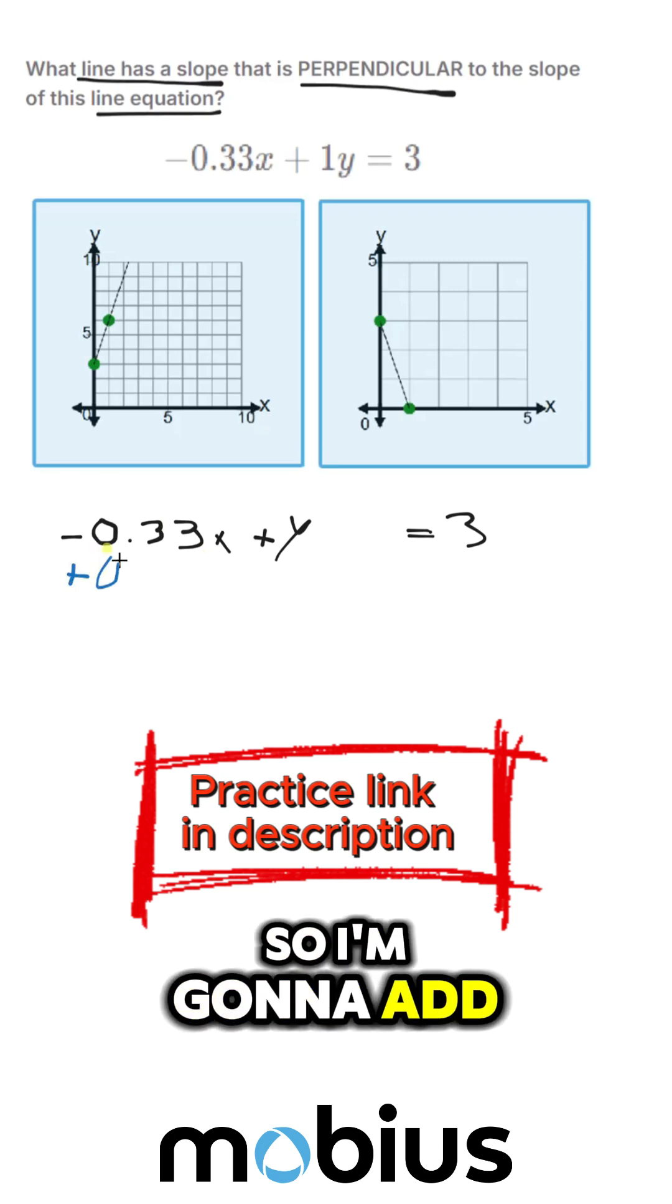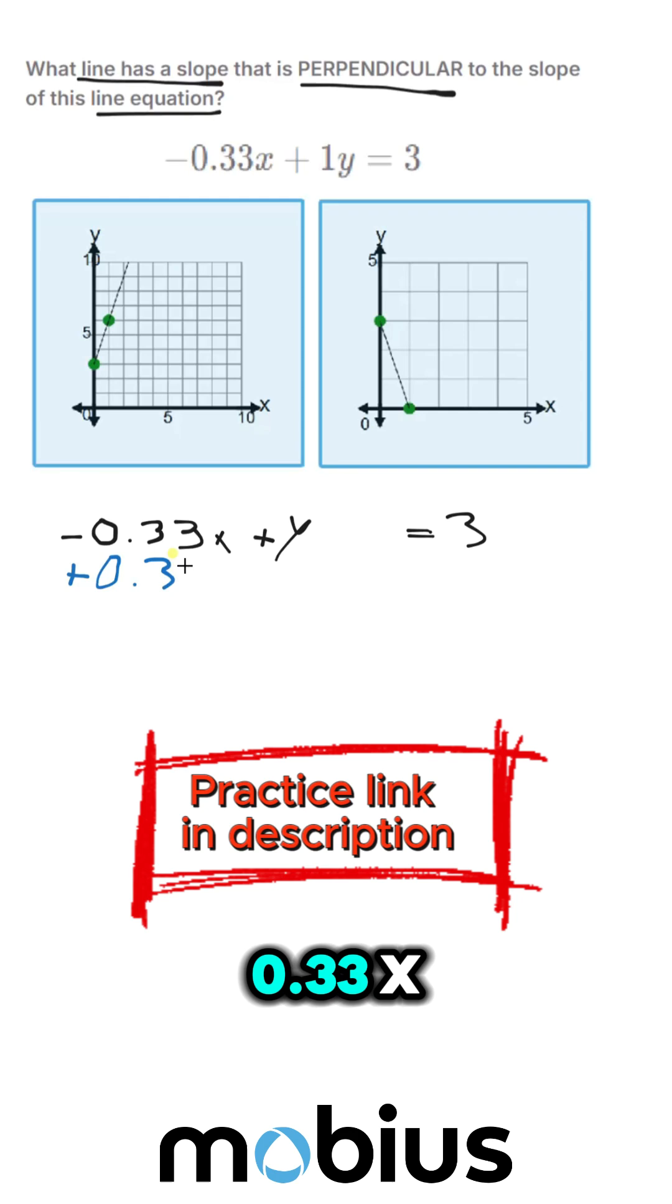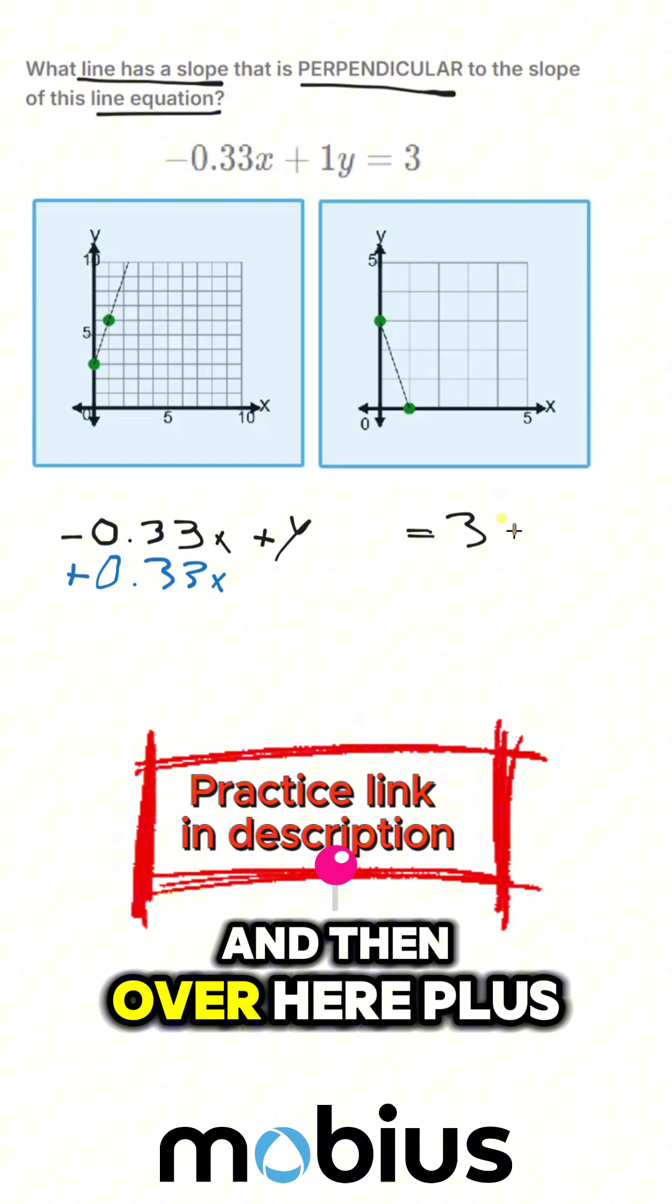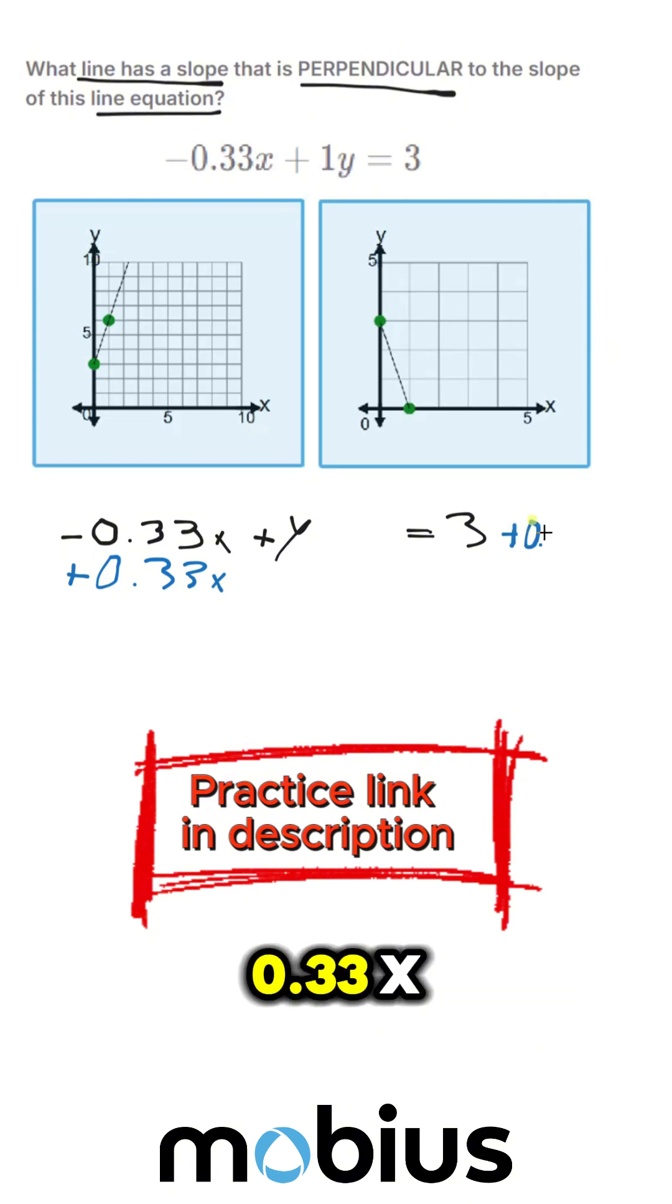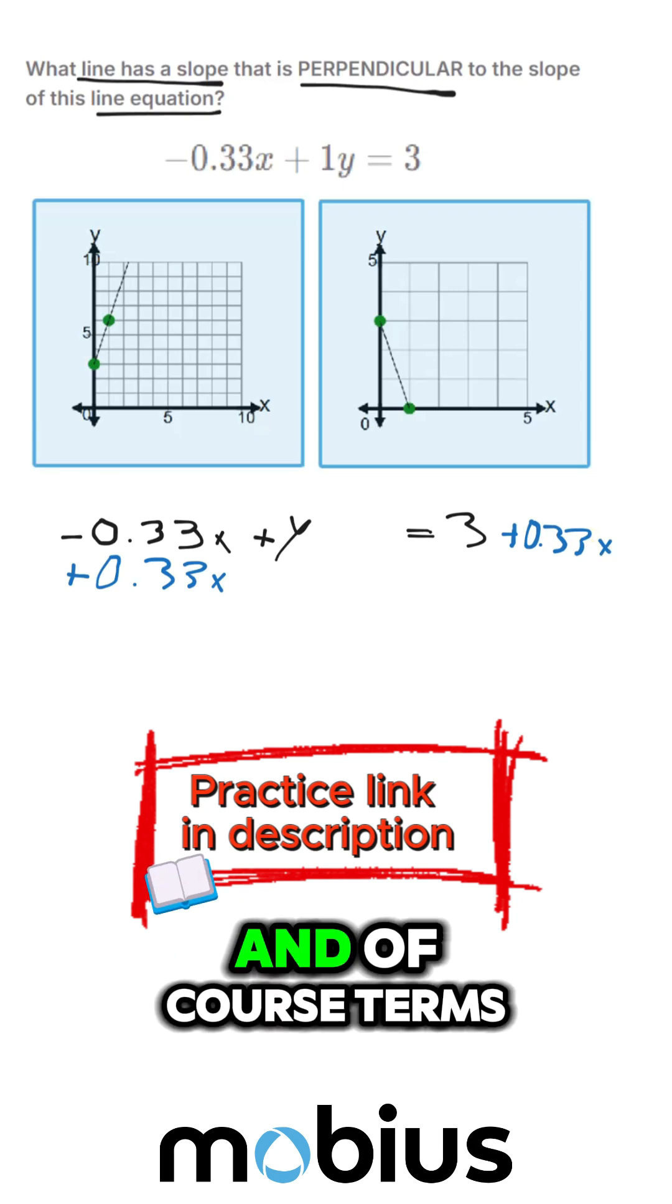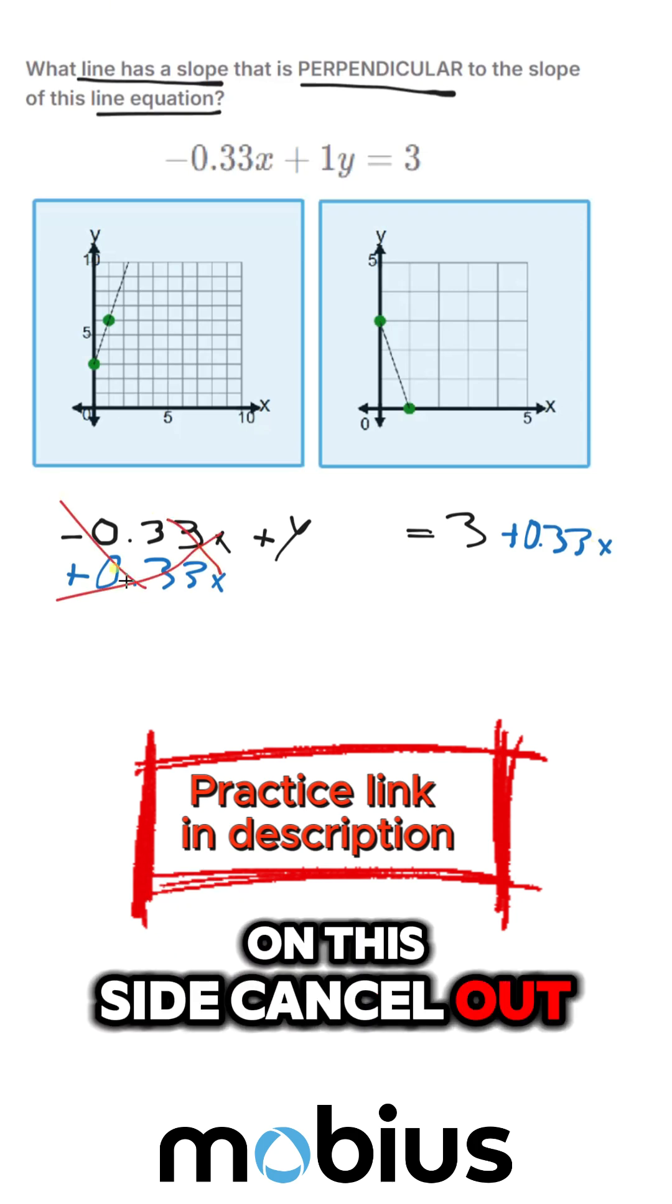So I'm going to add the same thing to both sides, 0.33x and over here plus 0.33x and of course terms on this side cancel out.